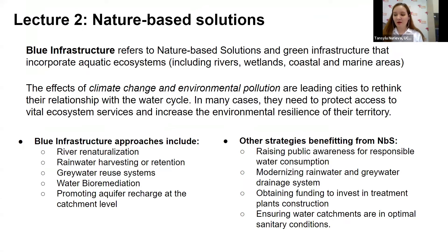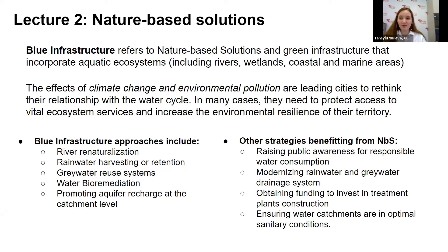Blue infrastructure relates to nature-based solutions and green infrastructure, and incorporates aquatic ecosystems — rivers, wetlands, coastal and marine areas. Most cities have developed historically in locations close to water, with high water dependency due to human consumption, drinking water, sewerage, sanitation, transportation and other services. The effects of climate change and environmental pollution are leading cities to rethink their relationship with the water cycle. Municipalities have a role in preventing degradation of their aquifers by coordinating strategies and improving management.